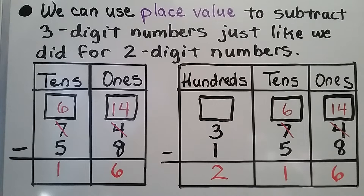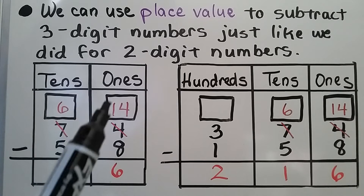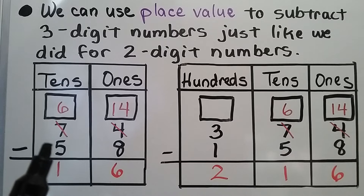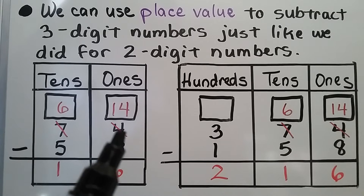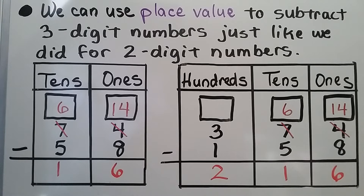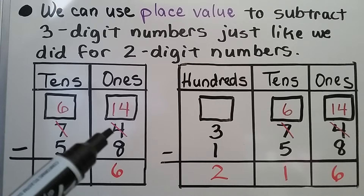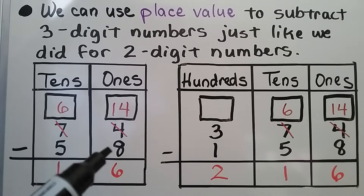We can use place value to subtract three-digit numbers, just like we did for two-digit numbers. We have our tens place and our ones place. We want to subtract and do 74 minus 58. We'll look at the ones column — that's where we start. And 4 is less than 8, so we're going to need to regroup.